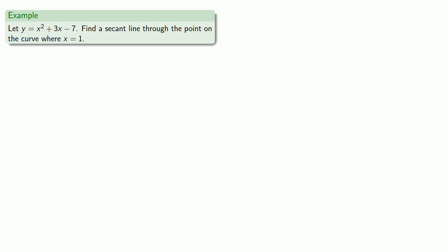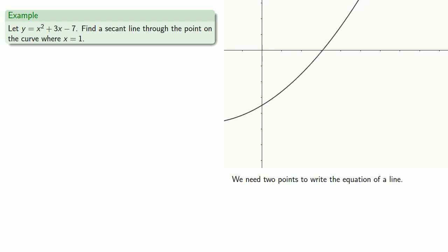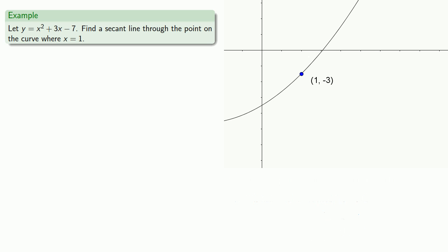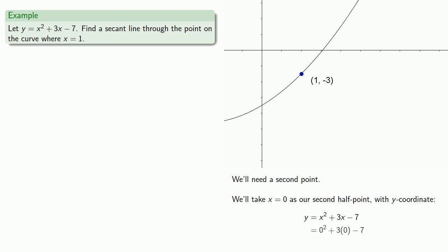For example, let's consider the curve y = x² + 3x − 7 and find a secant line through the point on the curve where x = 1. We need two points, so we find the y-value at x = 1, which is −3, giving the point (1, −3). Taking x = 0 as our second point, the y-coordinate is −7, so the second point is (0, −7).